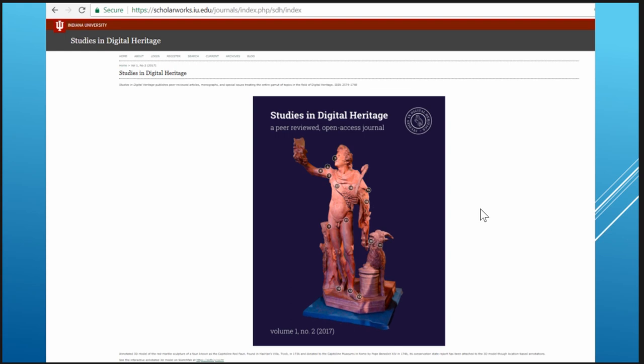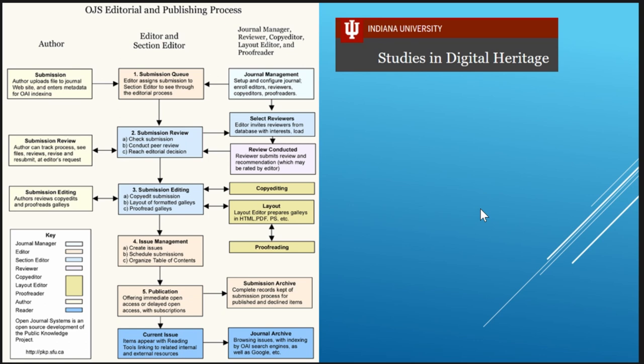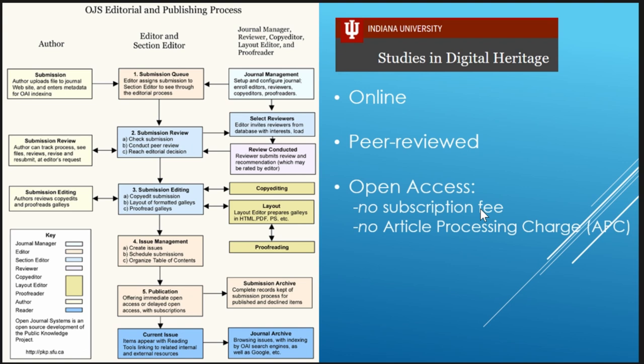The journal is published using the journal management software known as Open Journal Systems, which many open access journals use around the world. We offer professionals active across all sub-fields of digital heritage the opportunity to publish their work online with peer review, no-cost open access — no cost to readers, subscribers, or institutions — and no cost to authors. We have no article processing charge.